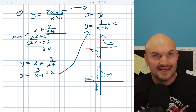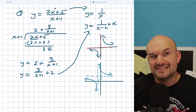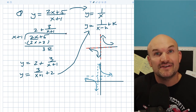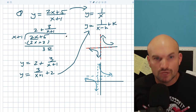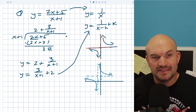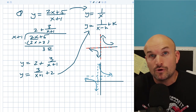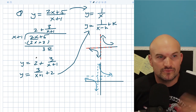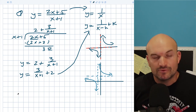Now this doesn't work for all of them — not every rational expression will work like that. But when the degrees of the numerator and denominator are the same, you can give it a shot. Hopefully this will be something that allows you to graph things using a different technique than what you were originally taught.